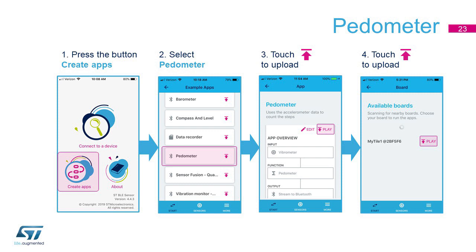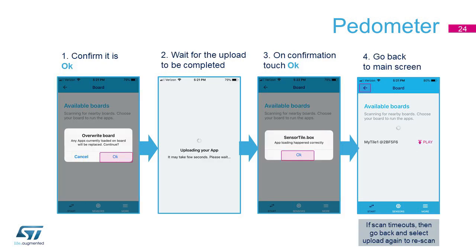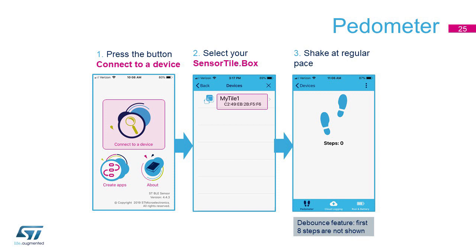Another useful pre-recorded example is the pedometer. It counts steps when the SensorTile.Box is attached to the belt. To activate it, as with the other examples, go to the Create App screen and upload it in the usual way. Accept to overwrite the previous app, and connect to your SensorTile.Box to run it. Please note the best accuracy is achieved when the box is applied to the belt. The first eight initial steps are not immediately shown to remove possible false steps.